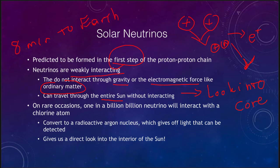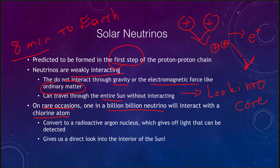Neutrinos can get to Earth directly in eight minutes because they are not stopped. By contrast, the energy being produced at the Sun right now could take hundreds of thousands of years to reach the surface. So if the Sun turned off, we would know very quickly by looking at neutrinos. To detect something that barely interacts with matter: one in a billion billion neutrinos will actually interact with a chlorine atom, converting it to radioactive argon and giving off a flash of light that can be detected. This gives us a direct look into what the Sun is doing right now.